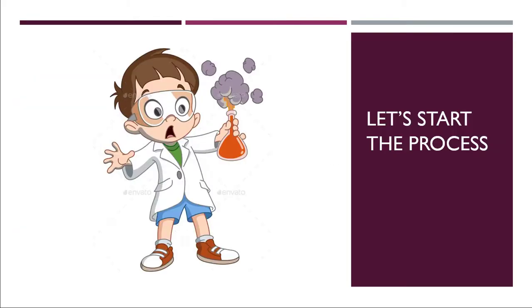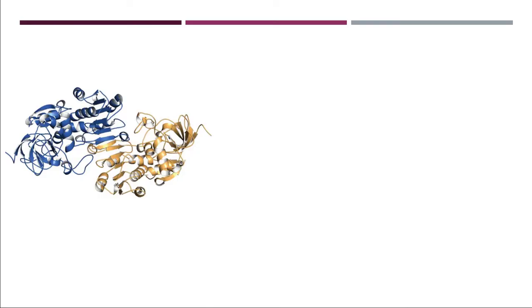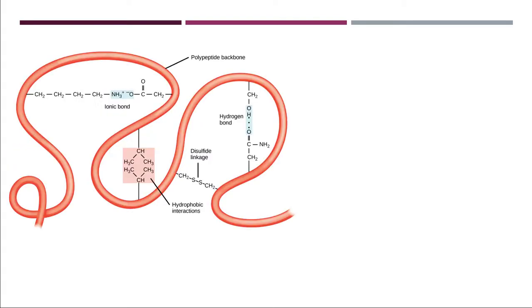So let's start the process. Initially, we will take a protein sample. In that sample, the protein will be present in the form of tertiary or quaternary structures. In tertiary and quaternary structures, proteins will make different bonds with each other, especially the disulfide linkage bond.